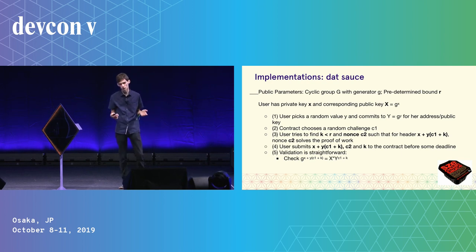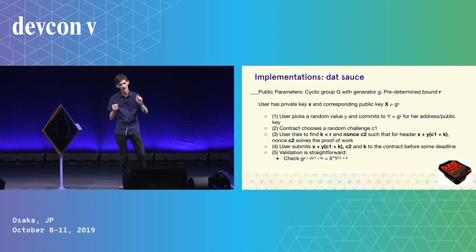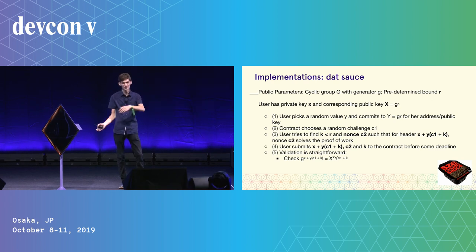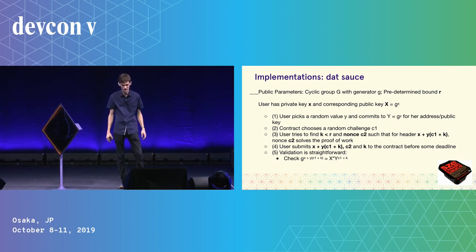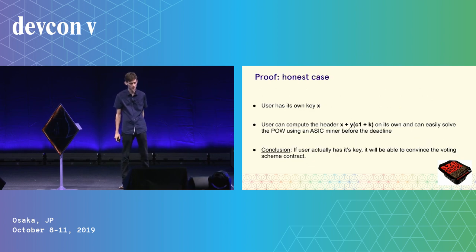What we're actually implementing uses a cute trick for the proof of work version: restrict the nonce space of the ASIC and require someone to try multiple times to generate a proof, such that if they try more than once, they can recover their own key. With high probability they'll then be able to eavesdrop on themselves.